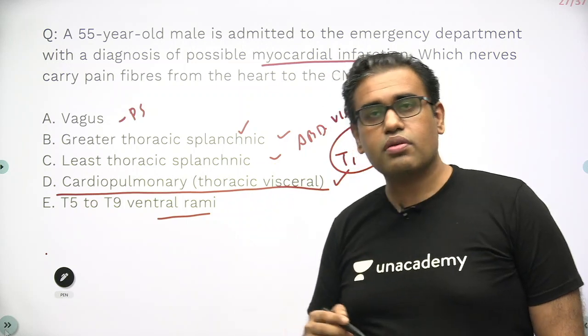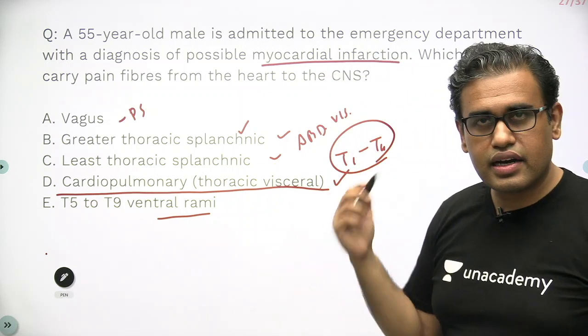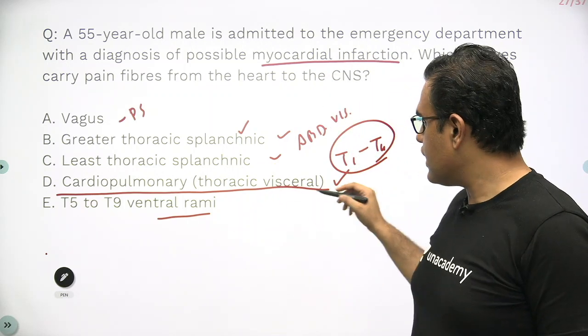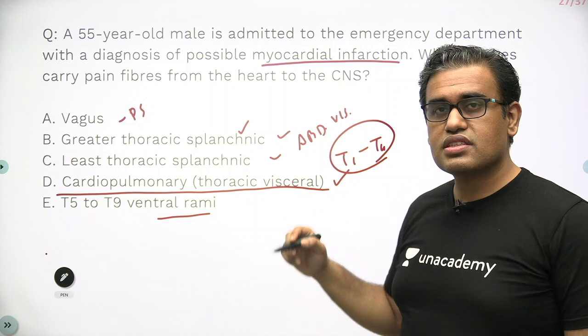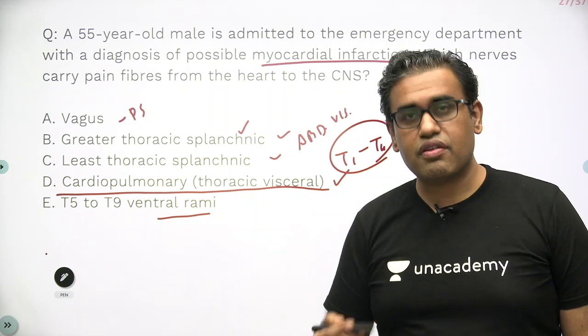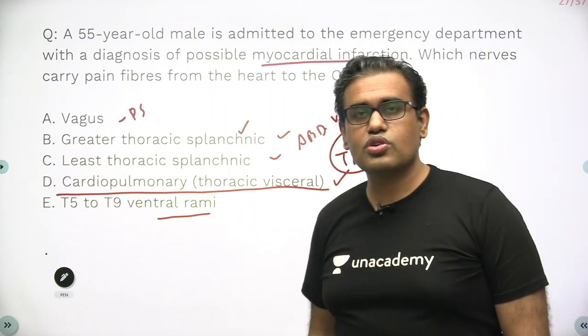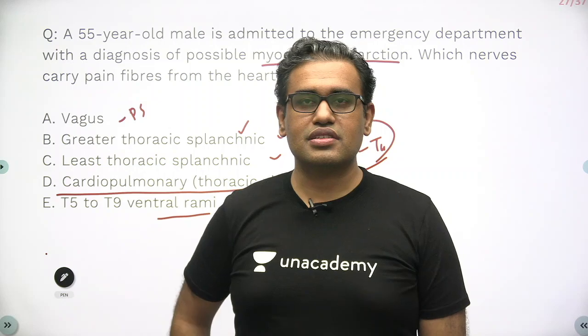So pain from the heart — heart attack pain, MI pain — is carried by the cardiopulmonary or thoracic visceral afferent fibers. That's all for the MCQ. Follow us for more MCQ sessions. Thank you.